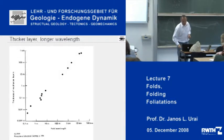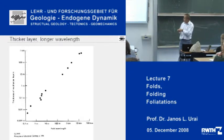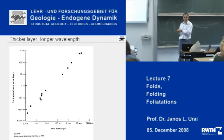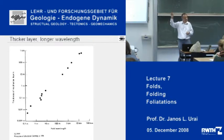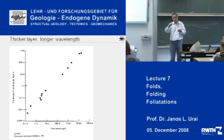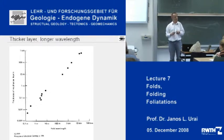And this has been plotted in quite a famous diagram, from the book by Sapi. Here is the logarithm of the fold wavelength — and look at this: this is 10 cm and this is 100 km. It's quite a diagram. And here is the thickness of the layer which is being folded — one millimeter and one kilometer. There is actually a very good correlation: thin layers form short wavelengths, thick layers correspondingly long wavelengths.